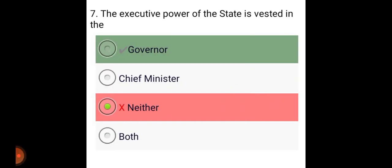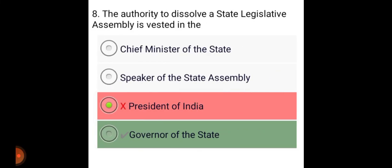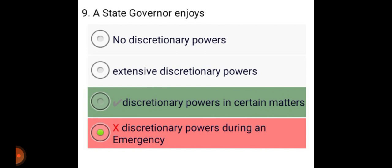The Executive Power of the State is vested in the Governor. The authority to dissolve a State Legislative Assembly is vested in the Governor of the State. A State Governor enjoys discretionary powers in certain matters.